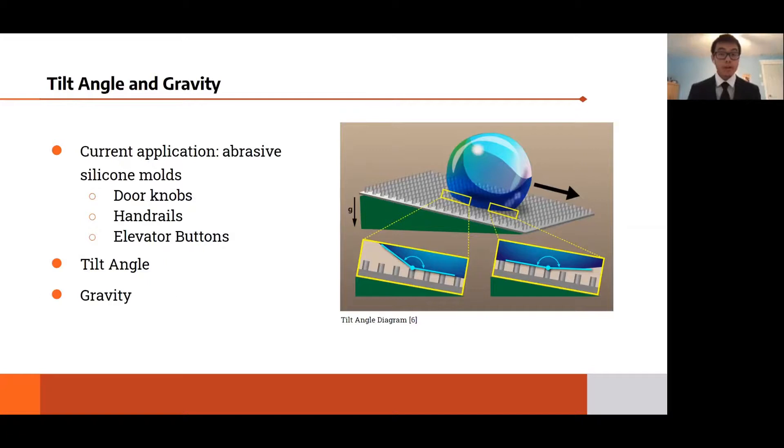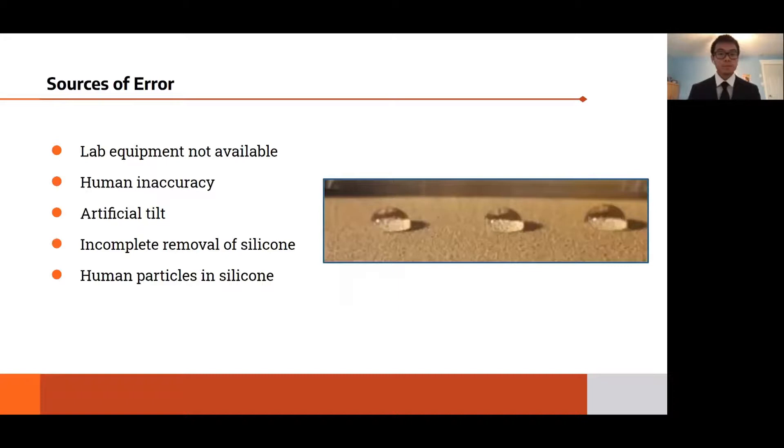For example, a P3000 silicone impression will require a smaller angular displacement for the bacteria to roll off of it in comparison to a P80 silicone impression. Thus, the hydrophobicity of the silicone impression in conjunction with the tilt angle creates a feasible product that can combat the spread of germs.